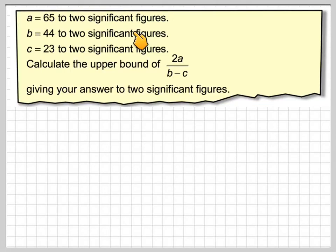A is equal to 65 to 2 significant figures, B is equal to 44 to 2 significant figures, C is equal to 23 to 2 significant figures. Calculate the upper bound of 2A divided by B minus C, giving your answer to 2 significant figures.